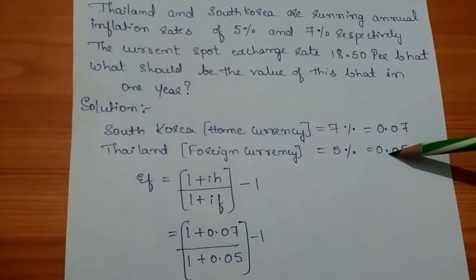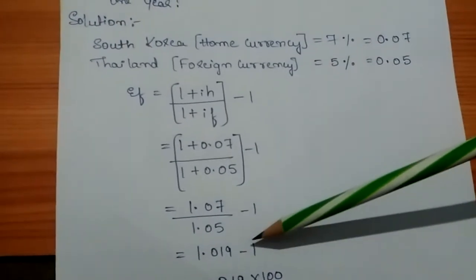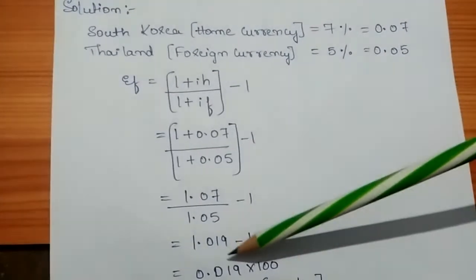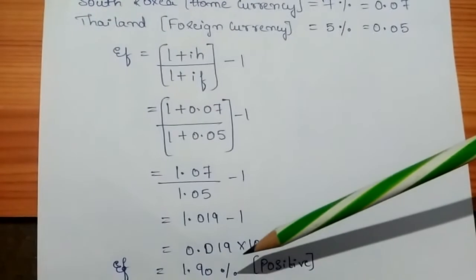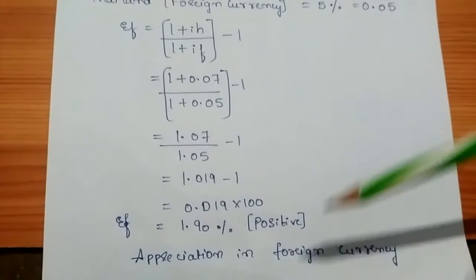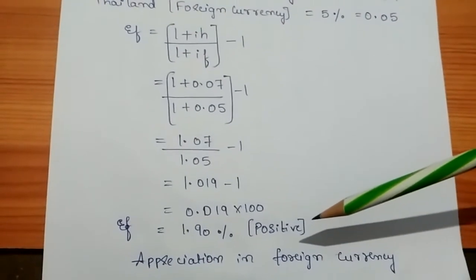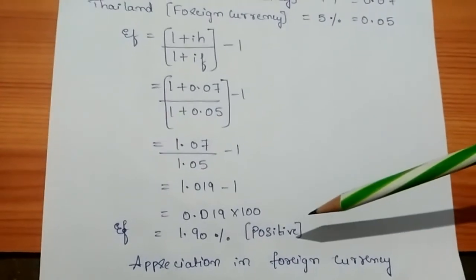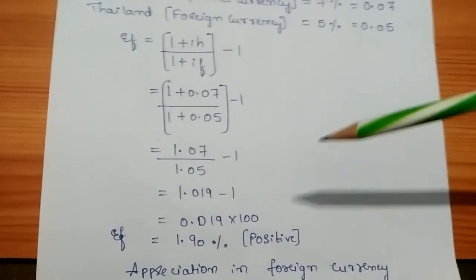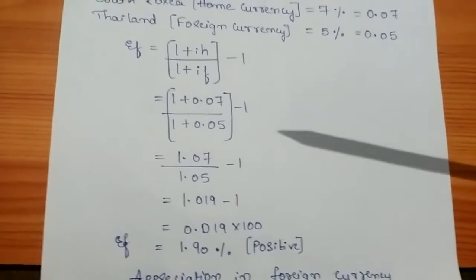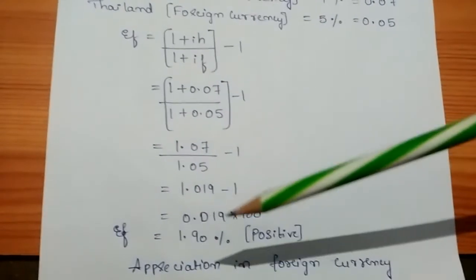Dividing 1.07 by 1.05 gives 1.019, and deducting 1 gives 0.019. Multiplying by 100 gives 1.90%. Since this is positive, the foreign currency — the Thai Baht — has appreciated. Appreciation means the Baht's value has increased, so South Korea must give more WON per Baht. The Baht has appreciated by 1.90%.